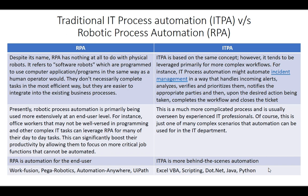On the other hand, traditional IT process automation is based on the same concept, however it tends to be leveraged primarily for more complex workflows. RPA tends to be used for less complex, repetitive, and routine tasks, while IT automation is utilized for more complex workflows. For instance, IT process automation might automate incident management in a way that handles incoming alerts, analyzes them, verifies and prioritizes them, notifies the appropriate parties.